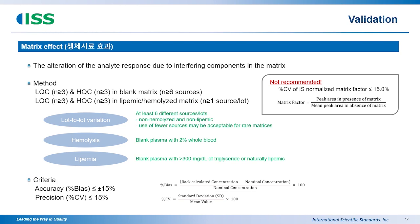If interference criteria are not satisfied, we need to check whether it can impact quantification. At least three different QC concentrations need to be applied. In the past, matrix factors were represented as concentration. However, with the Korean translation of ICH M10 becoming clearer, it is more about concentration than just the matrix factor. Percent bias and precision — meaning accuracy and precision — need to be within acceptable criteria only, to prove there is no impact on the biological sample.